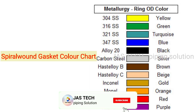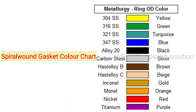Spiral wound gasket ring OD color: SS304 - yellow. SS316 - green. SS321 - turquoise. SS347 - blue. Alloy 20 - black. Carbon steel - silver. Hastelloy B - brown. Hastelloy C - beige. Inconel - gold. Monel - orange. Nickel - red. Titanium - purple.